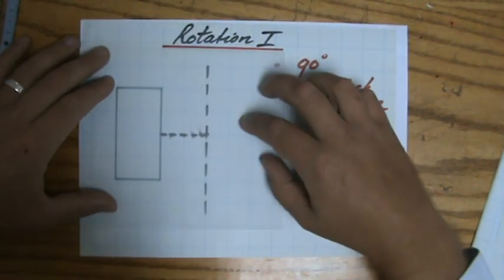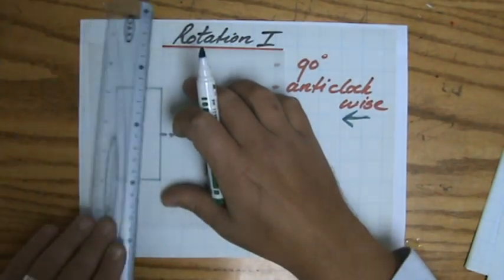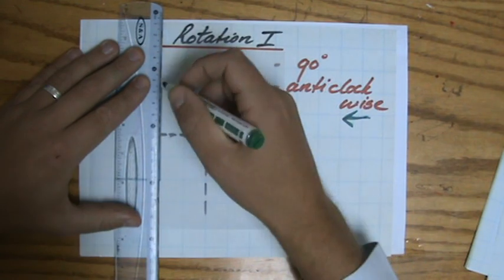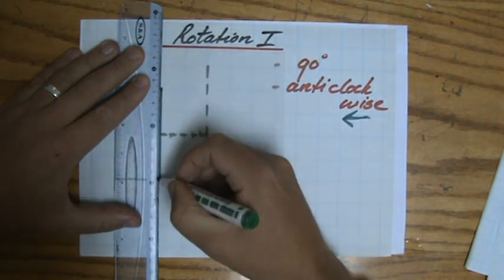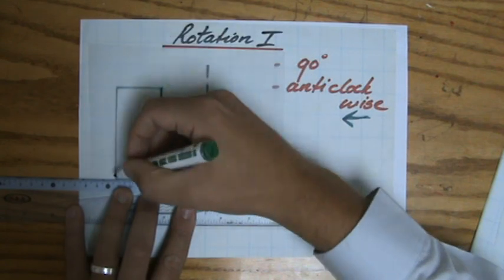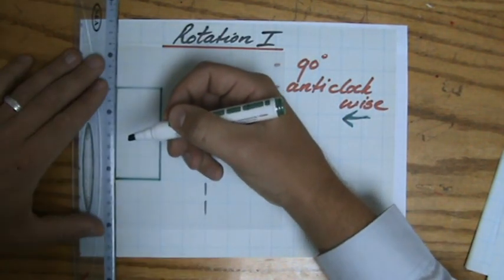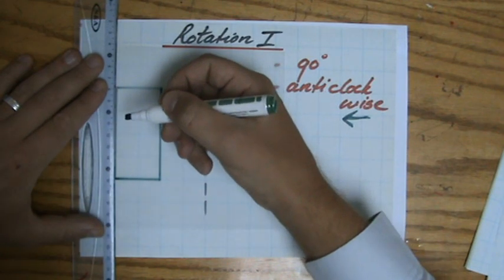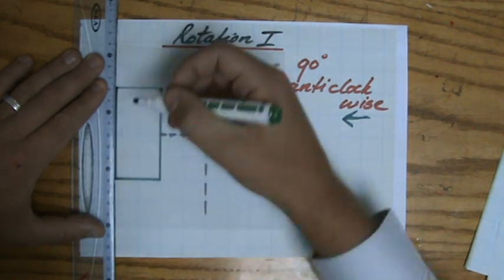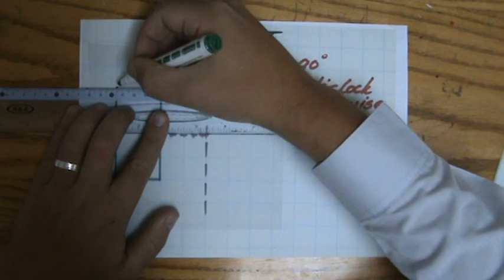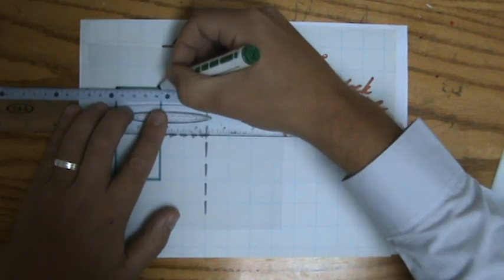I'm going to put my tracing paper over it, and I'm going to trace my object. Of course I have to do that very accurately. There we go, it's a rectangle. Make sure you hold the tracing paper firmly to the table, so that it doesn't move. There we go, and the last one. Two units. There's my rectangle.